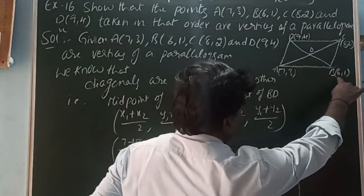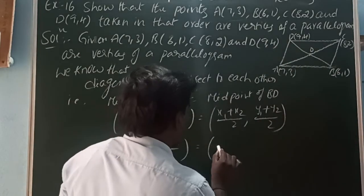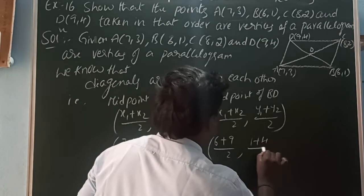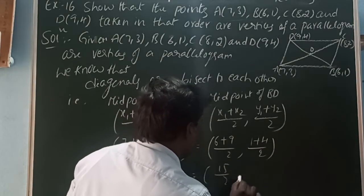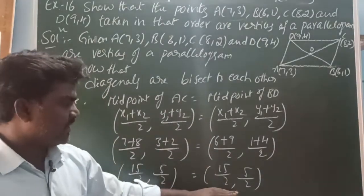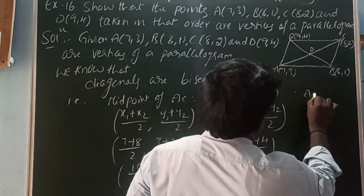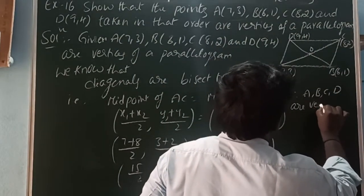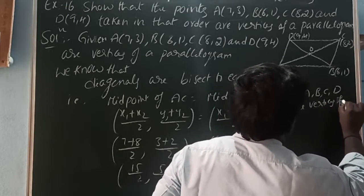For BD: x1 is 6, y1 is 1, x2 is 9, y2 is 4. So the midpoint of BD is (6+9)/2, (1+4)/2, which gives 15/2 and 5/2. The midpoint of AC and midpoint of BD are both the same. Therefore, A, B, C, D are vertices that form a parallelogram.